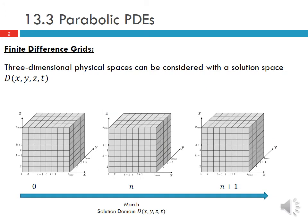Three-dimensional physical spaces can also be considered with a solution space D of X, Y, Z, and T. Here we would start with an initial condition in all of XYZ space and then march that whole thing forward in time.